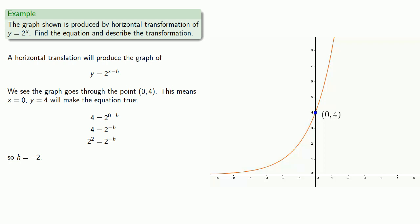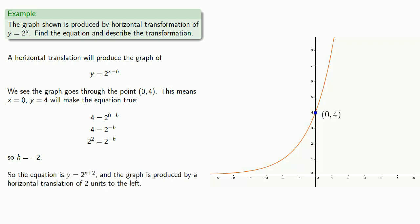So the equation is y equals 2 to the power x plus 2, and the graph is produced by a horizontal translation of 2 units to the left. We take the graph of y equals 2 to the x and shift it horizontally 2 units to the left.